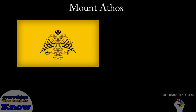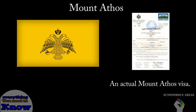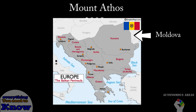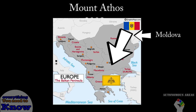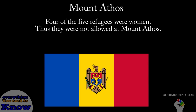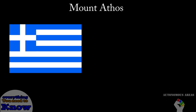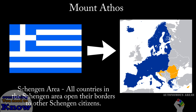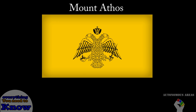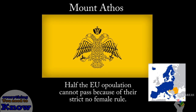There is actually a complex procedure to visit Mount Athos in which you have to apply for a visa to visit. This visa is only available to men, which means that women are strictly prohibited, and which is very controversial in this day and age. In 2008, five Moldovans looking for refuge crossed the border illegally and ended up in Mount Athos. Since four of the Moldovans were women, their presence in Athos was illegal, but when the monks caught them, they forgave them because of their predicament. Also, since Greece is part of the EU and the Schengen area, Mount Athos is one of the only places in the Schengen area where half the EU citizens cannot pass legally.